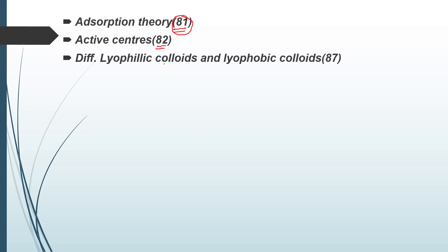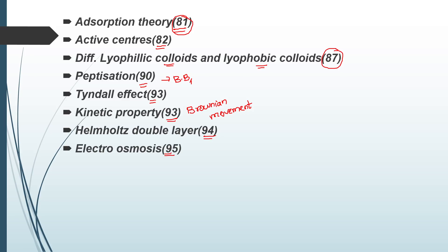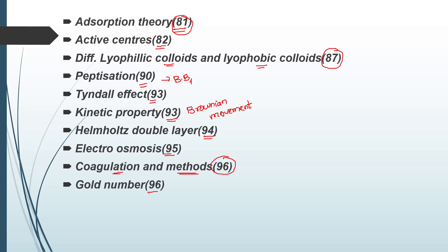The difference between lyophilic and lyophobic colloids is on page 87. Next, peptization — process on page 90. Tyndall effect on page 93. Kinetic properties of colloids including Brownian movement — very important, page 93. Helmholtz double layer, page 94. Electro osmosis, page 95. Coagulation and methods of coagulation, page 96. Define gold number. That's all about chapter 10.